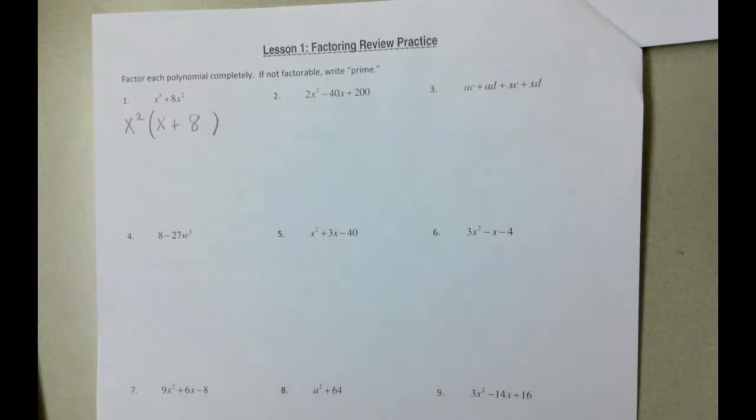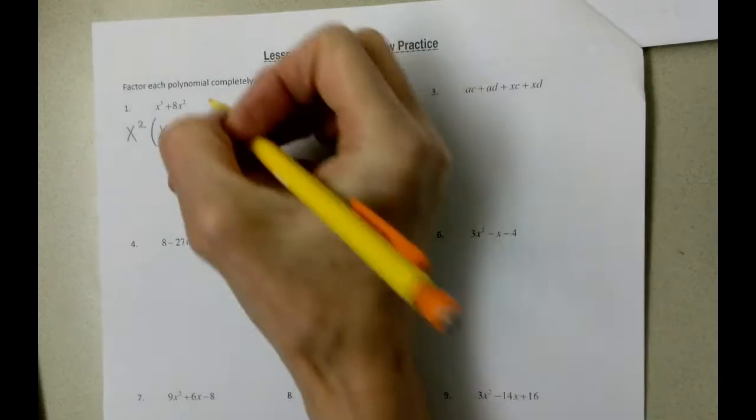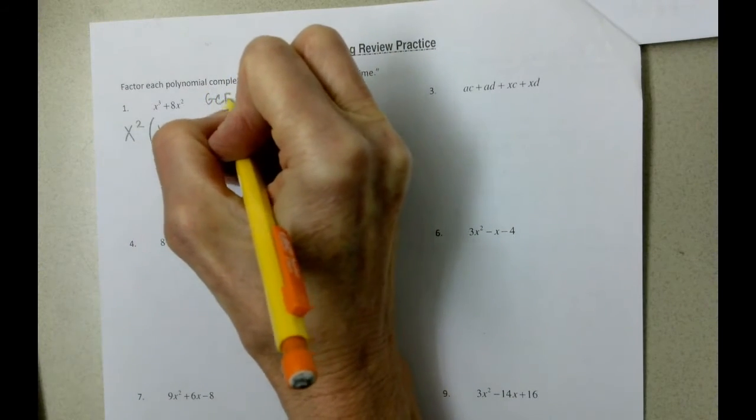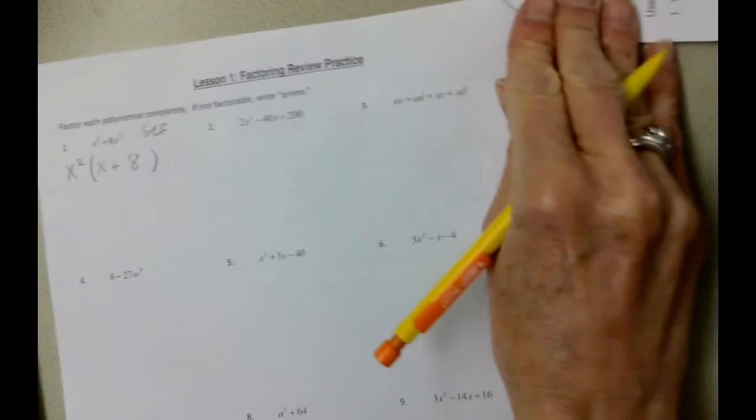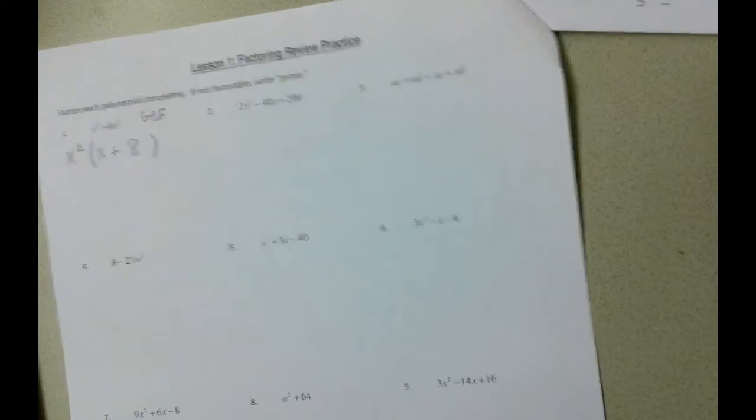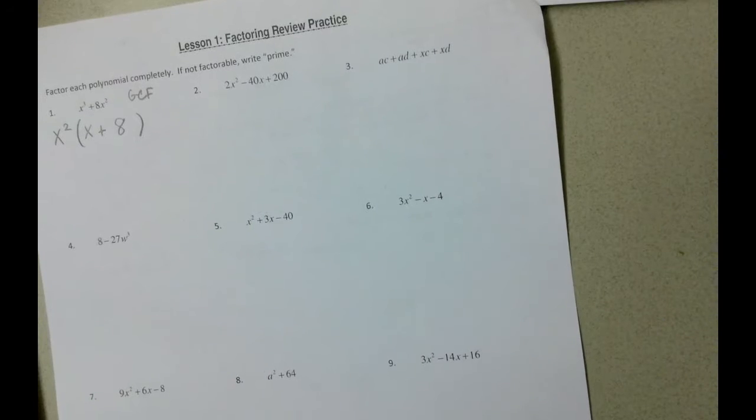And then we had two x's. We took them out, so we don't have any more x's, but we still have the eight. And that's the greatest common factor. That's all we can do on that problem. But as we start with our factoring, we should always ask ourselves, do we have a greatest common factor?